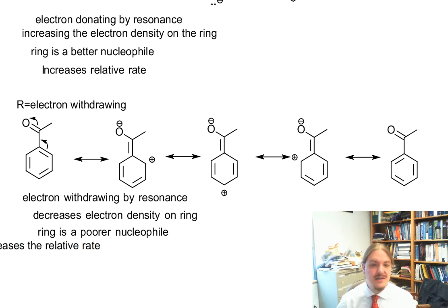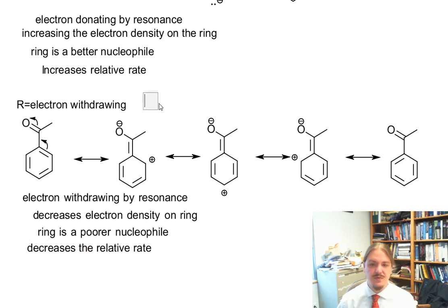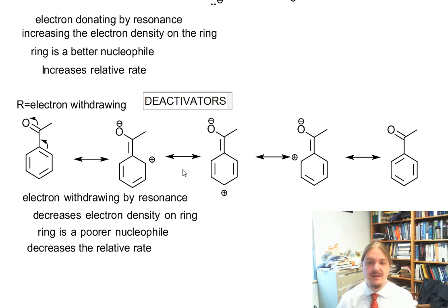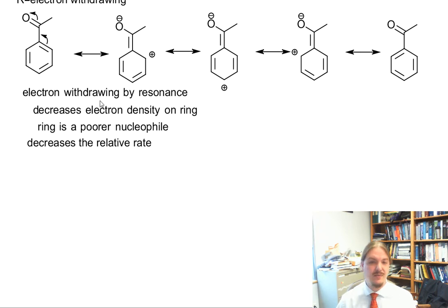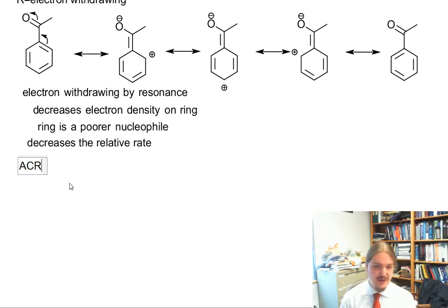This combination decreases the relative rate. Because of that, these kinds of groups are referred to as deactivators — they make electrophilic aromatic substitution reactions slower. Notice we're not talking about any specific electrophile at the moment; we're talking about substituents on the benzene ring.